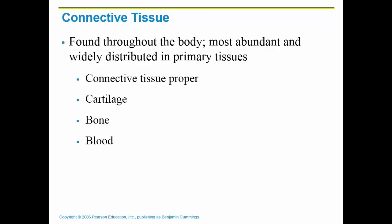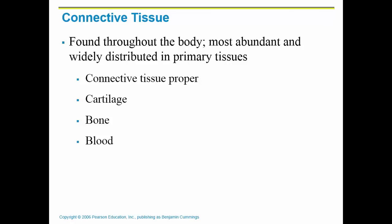The four types are connective tissue proper, which there are some types that will fit under that umbrella, cartilage — there are three types of cartilage — bone, and blood.